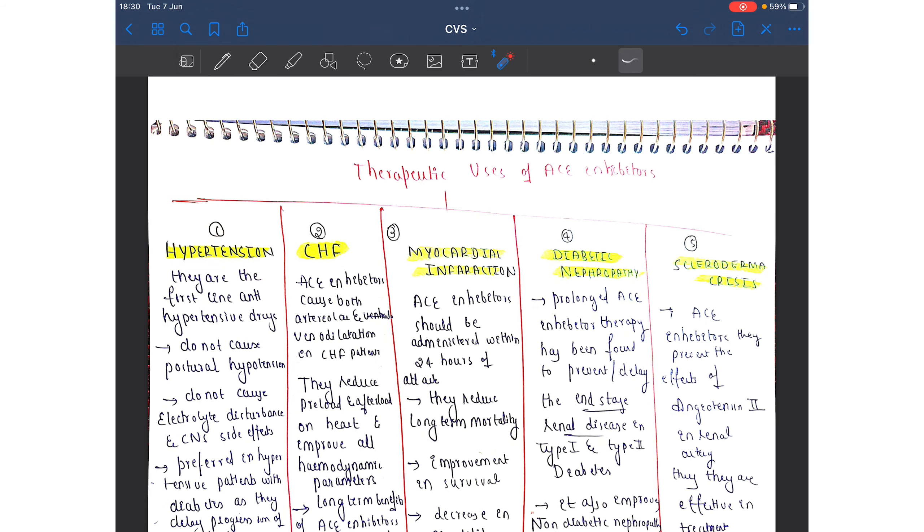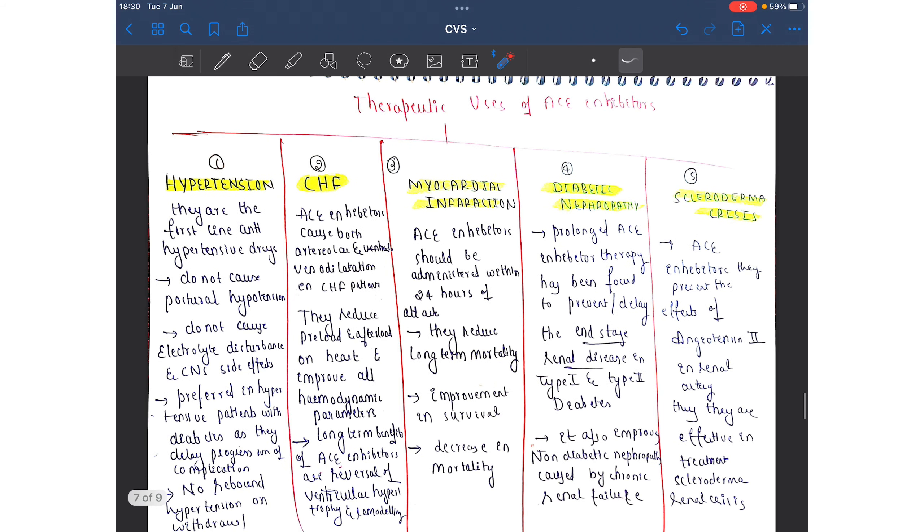They are used in congestive heart failure, myocardial infarction, diabetic nephropathy, and also in case of scleroderma crisis. In case of hypertension, they are used because they are the first-line antihypertensive drugs.